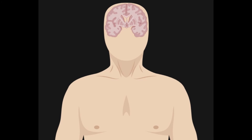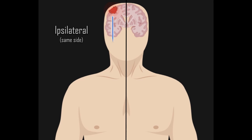Someone with a brain tumor or a stroke sometimes has symptoms that are defined in relation to the midline, because sometimes symptoms occur on the same side as the stroke or brain tumor, and sometimes they occur on the opposite side. For example, following a stroke you may have ipsilateral vision loss — vision loss on the same side as the stroke occurred — or you might have contralateral paralysis, meaning paralysis occurring on the opposite side.